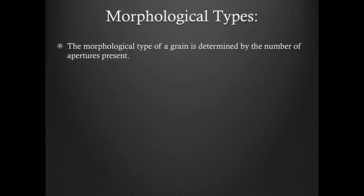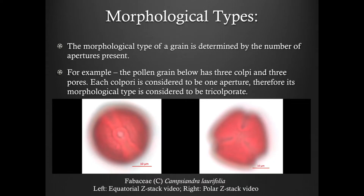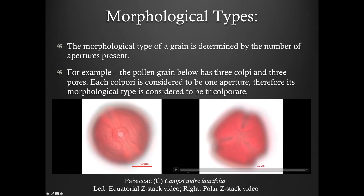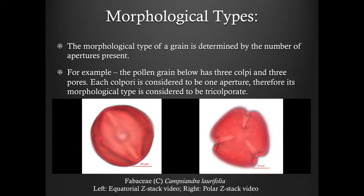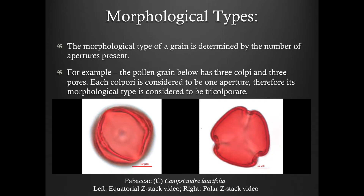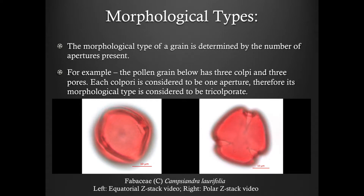The morphological type of a grain is determined by the number of apertures present on that grain. Let's look at the ZStack videos below for an example. The pollen grains shown have three colpi and three pores. Each colporate is considered to be one aperture, therefore its morphological type is considered to be tricolporate.